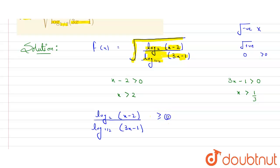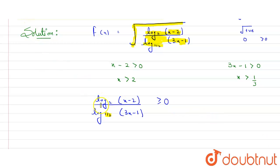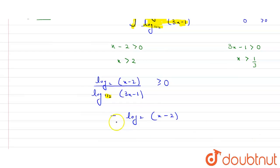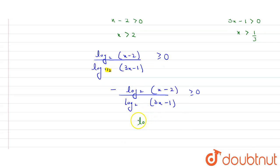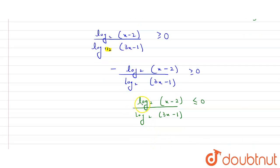Since one-half is the base, we can write it as 2 raised to the power minus 1, so the minus comes to the numerator. This converts log base one-half to negative log base 2. The inequality becomes log base 2 of (x minus 2) divided by log base 2 of (3x minus 1) less than or equal to 0. We can then combine these as log base 2 of (x minus 2)/(3x minus 1) greater than or equal to 0.